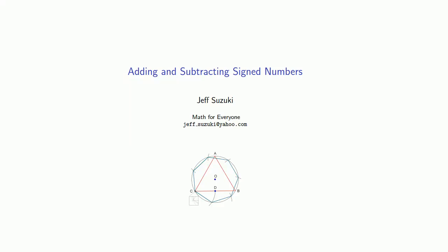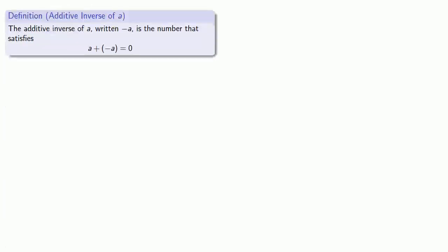The addition and subtraction of signed numbers is a big topic, and so this is part 2. Just a quick recap: the additive inverse of A, written minus A, is the number that satisfies A plus the additive inverse is equal to 0.